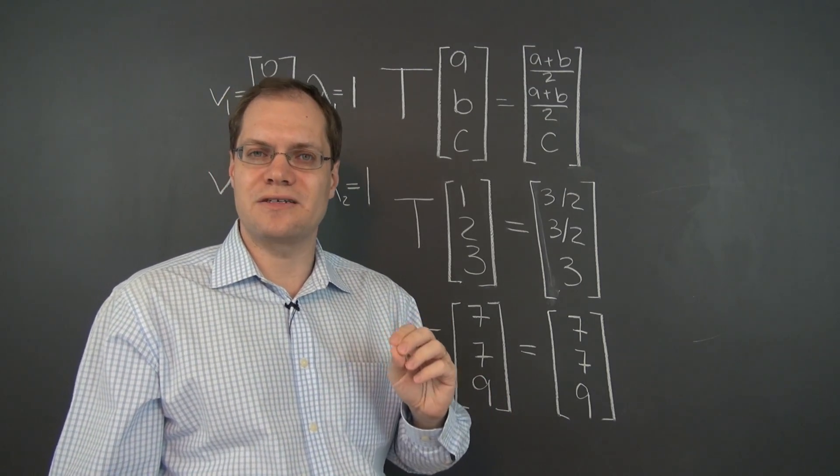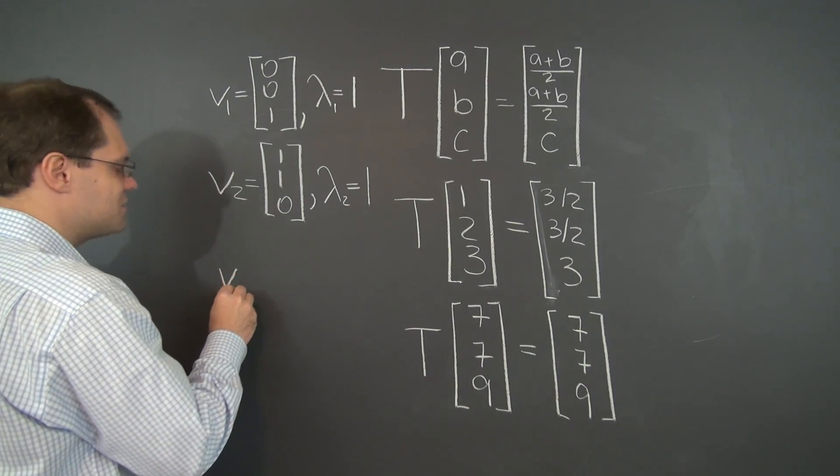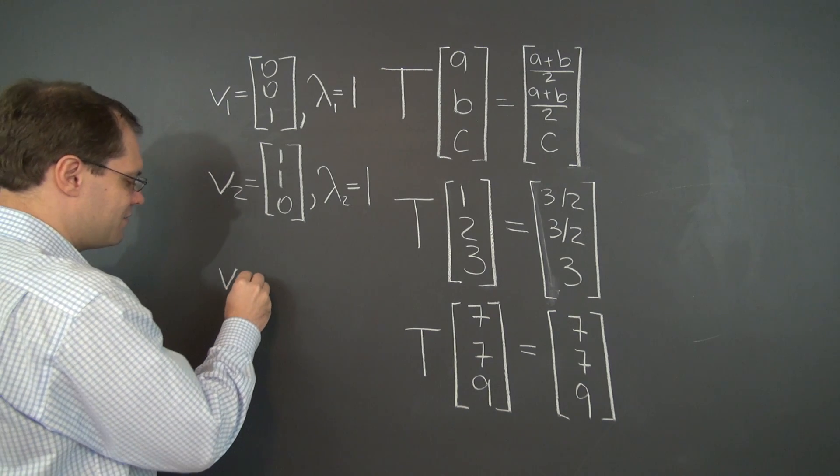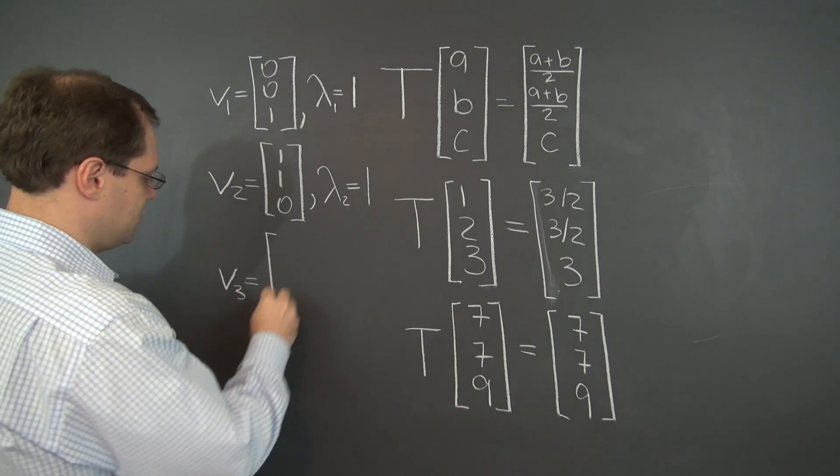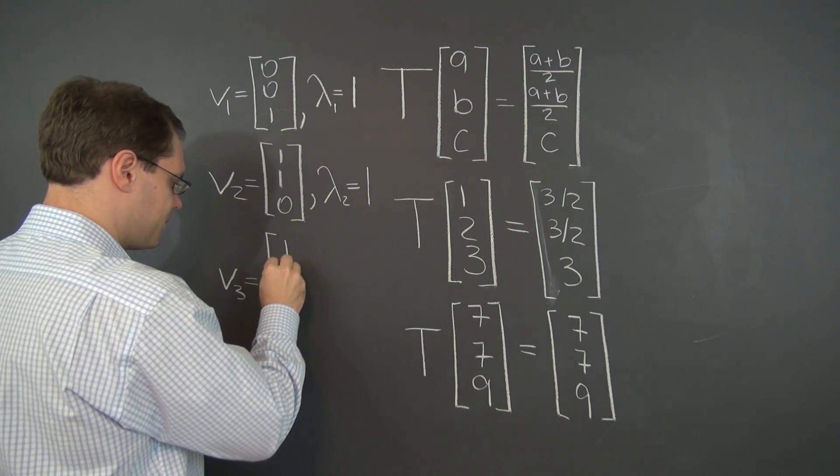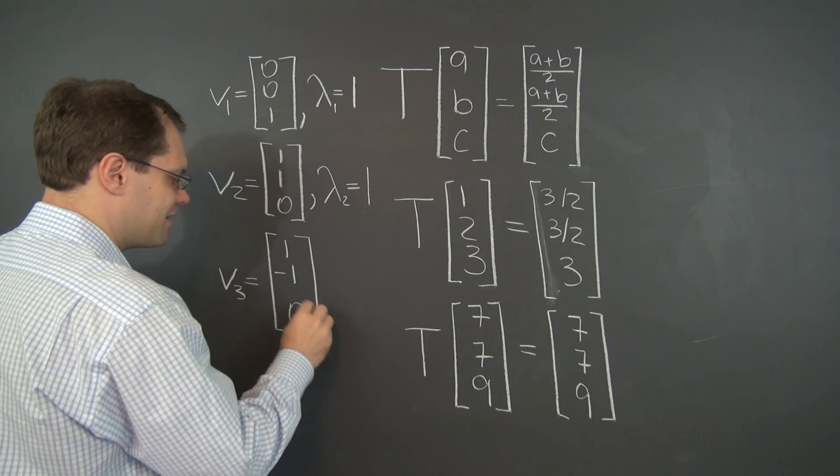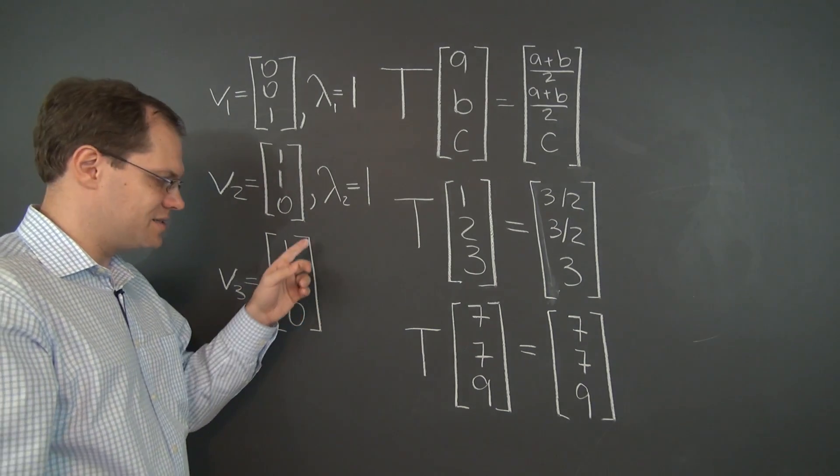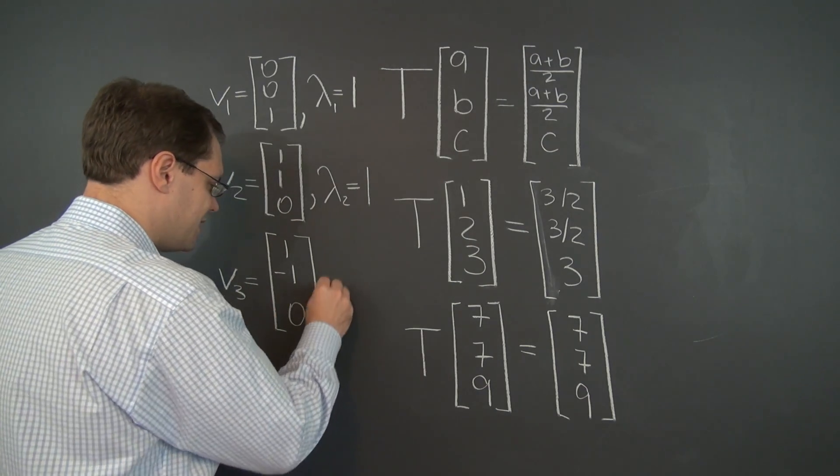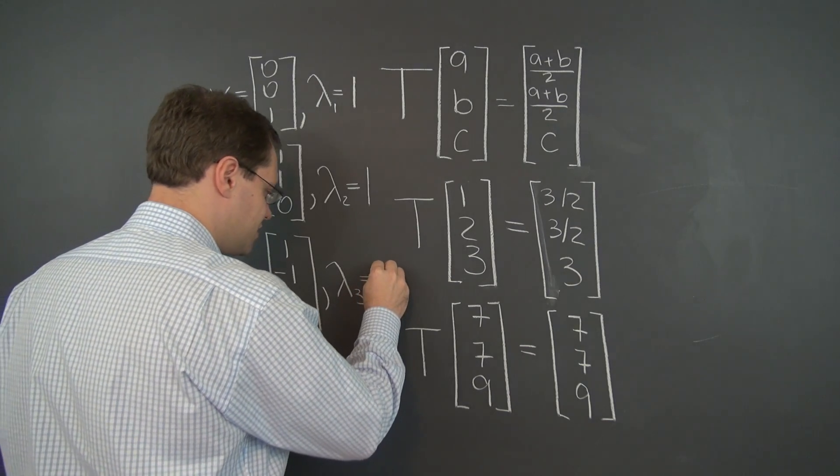So the simplest vector that takes advantage of this is 1, negative 1. So this transformation seems to have the same eigenvectors as the previous transformation. So 1, negative 1, 0. The result of applying the transformation to this vector is the 0 vector. So we'll say that the corresponding eigenvalue is 0.